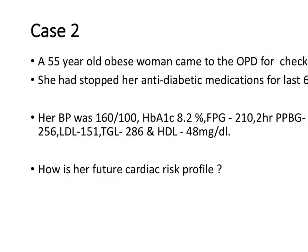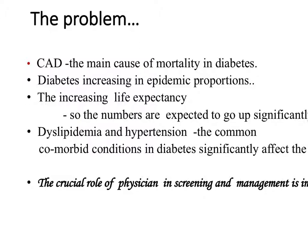Here is another clinical case: a 55-year-old obese lady who comes to the OPD for a checkup. When asked about her medications, she says she stopped taking them and feels fine. However, on investigation, her blood pressure is 160/100, HbA1c is 8.2, fasting and postprandial blood glucose levels are very high, and the total cholesterol, LDL, and triglyceride levels are all in the highest range. How can we risk-stratify such patients?